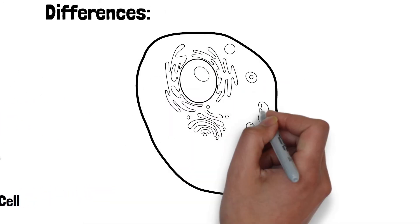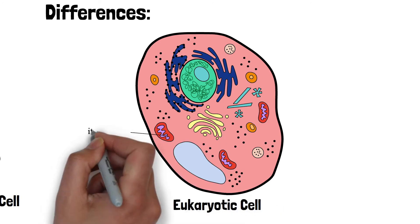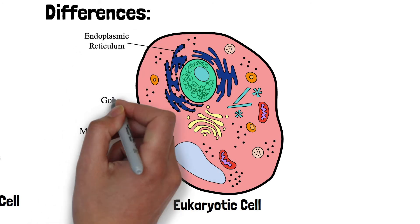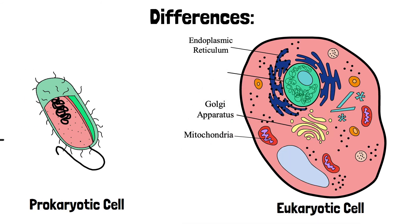The primary distinction between these two is that eukaryotic cells have membrane-bound organelles like mitochondria, endoplasmic reticulum, Golgi apparatus, etc. Some of the eukaryotes, like plants, also have chloroplasts, while the prokaryotes do not have membrane-bound organelles.